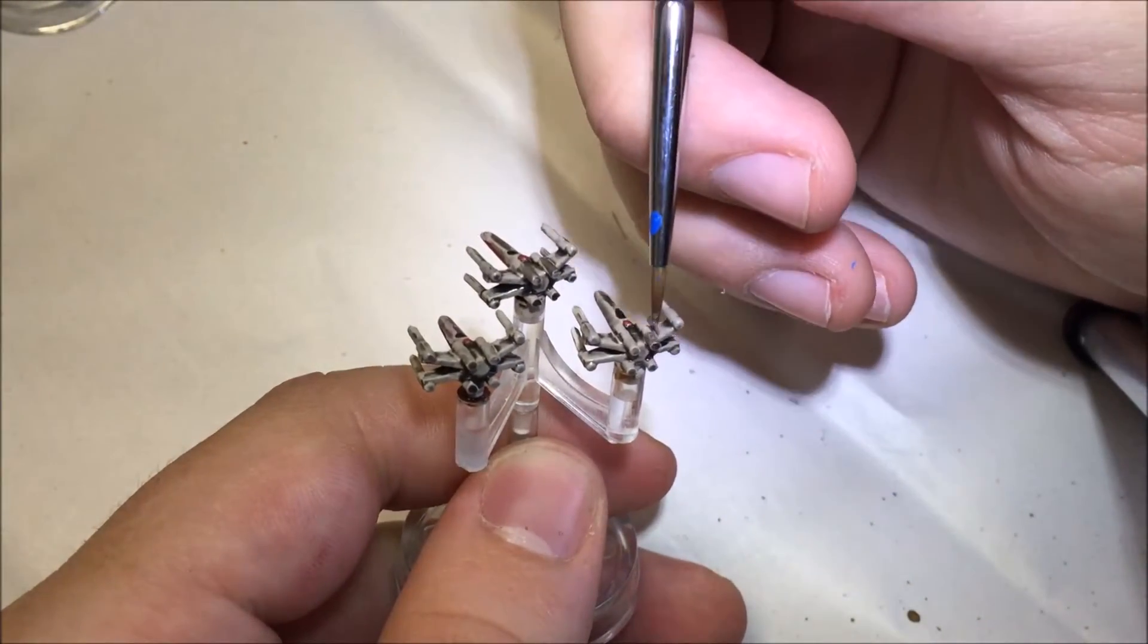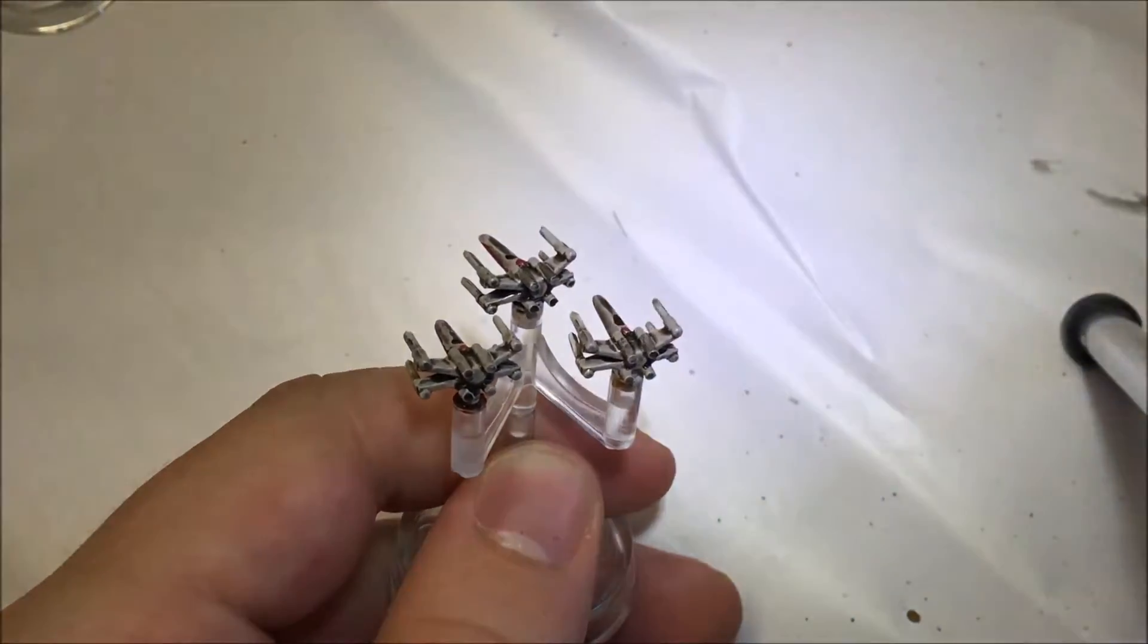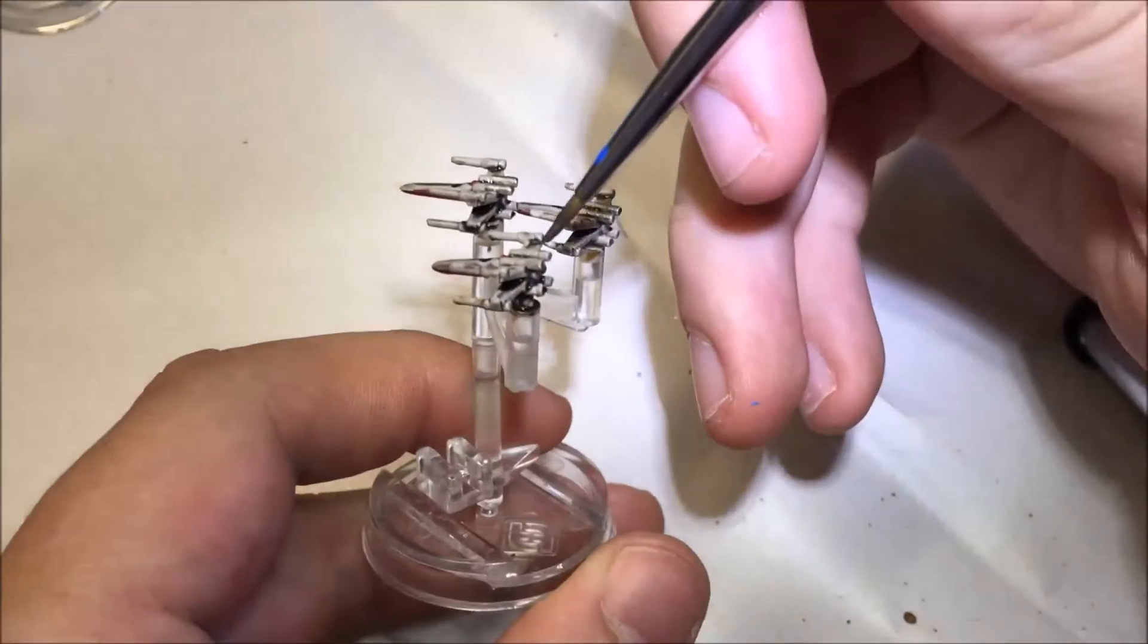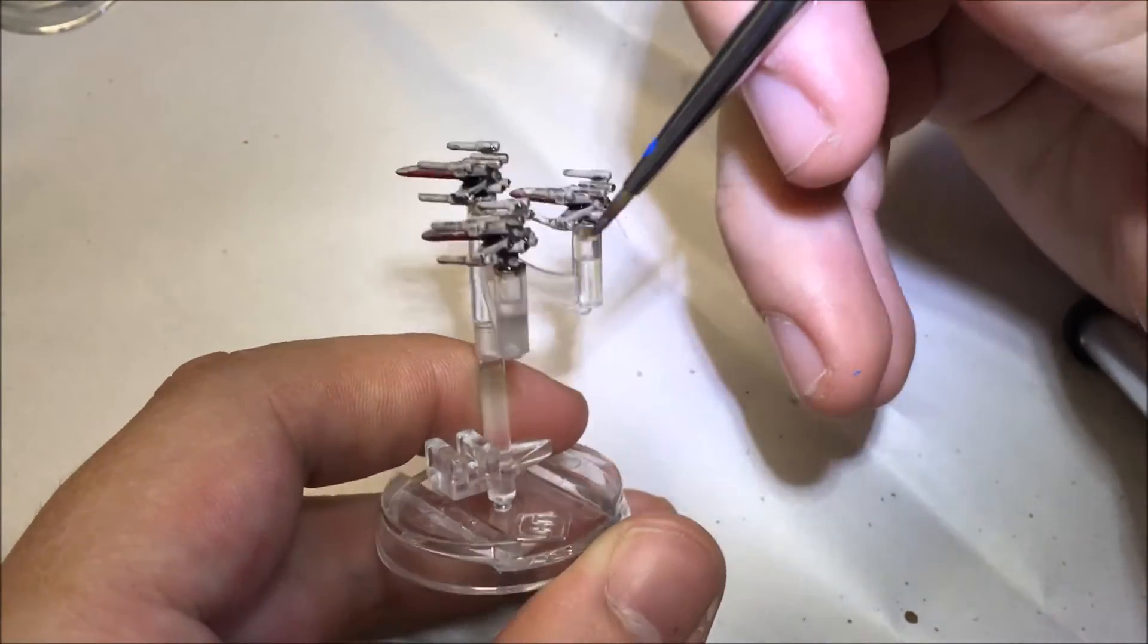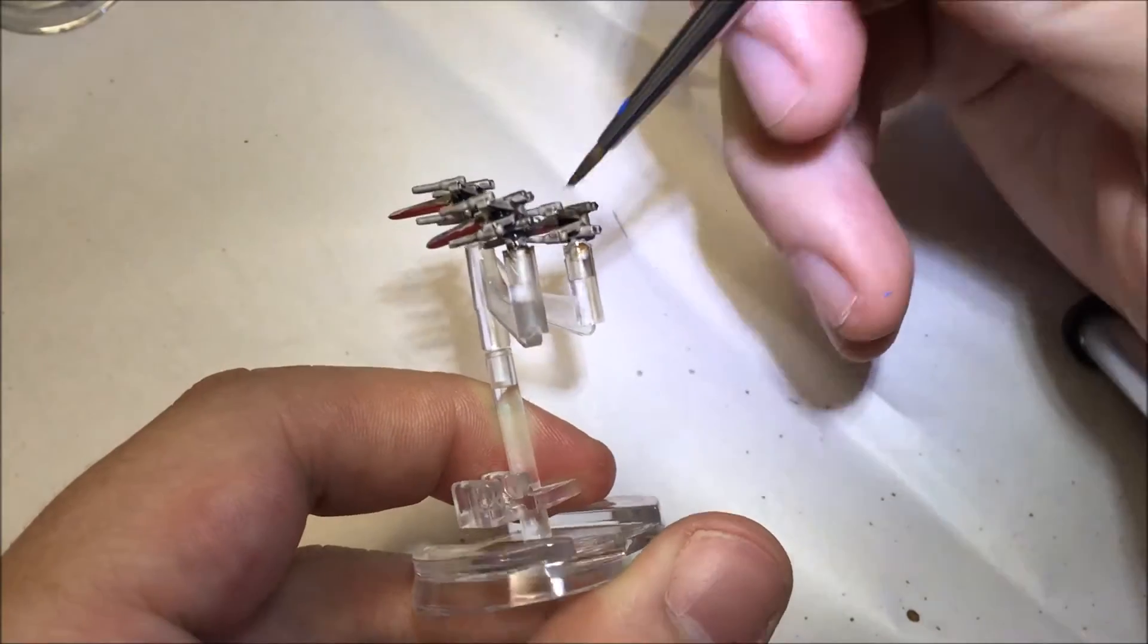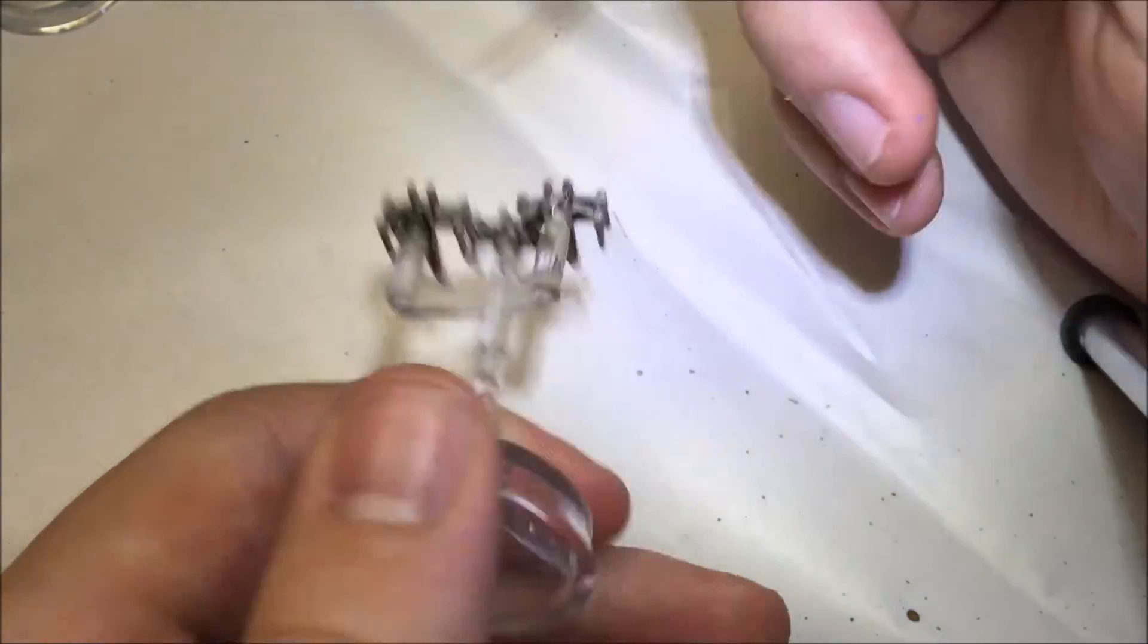The next step is to apply metal colour to the engines and the wing tips. Very carefully apply them to the engines, not going all of the way up but just the back half of them.